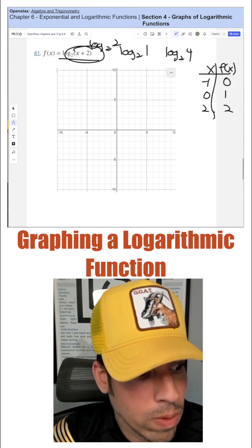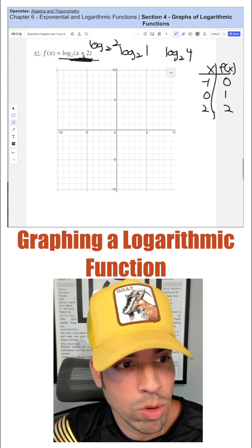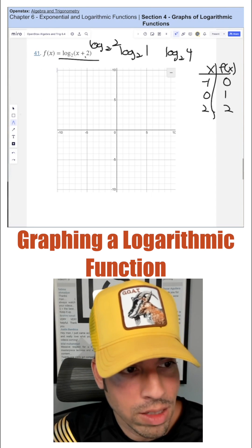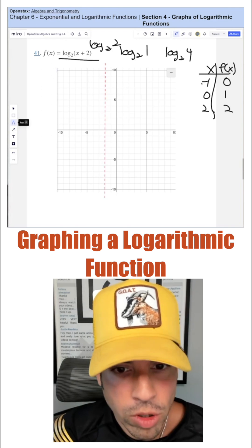Where is my vertical asymptote? Well, that's gonna be when this argument zeros out because we can't take zero or negative numbers, which means it's gonna zero out at negative two. So we have a vertical asymptote at X equals negative two. So there's my vertical asymptote.